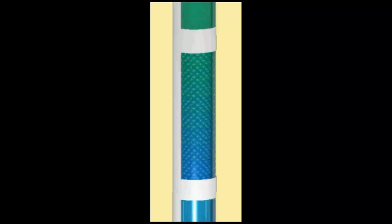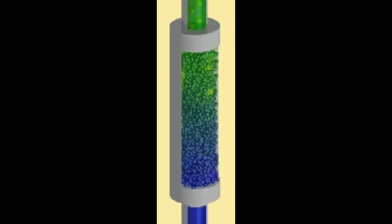The trickle bed reactor involves the downward movement of a liquid and a gas over the packed bed of catalyst particles.